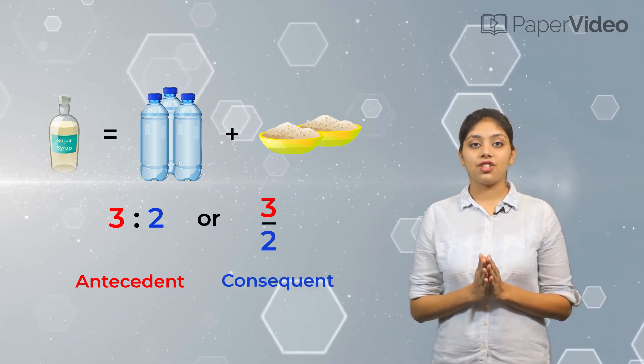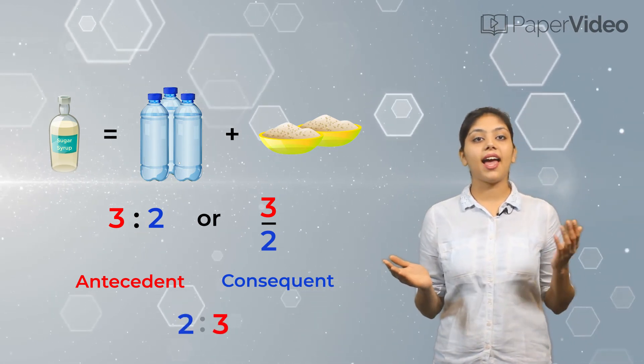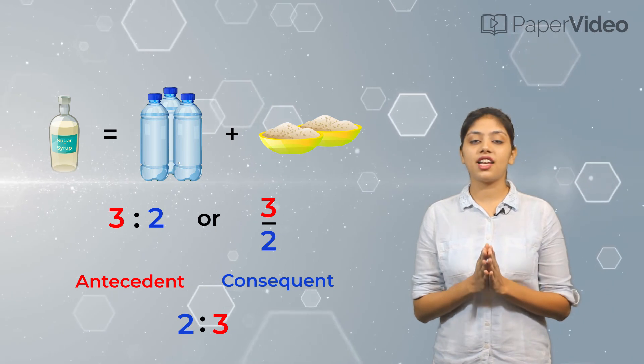The order of a ratio is important because on reversing the antecedent and consequent, a different ratio is obtained.